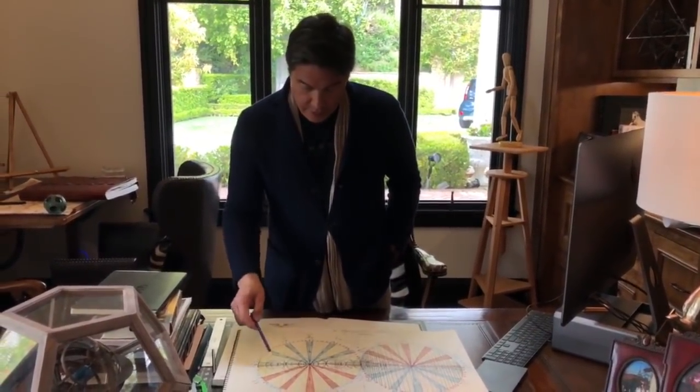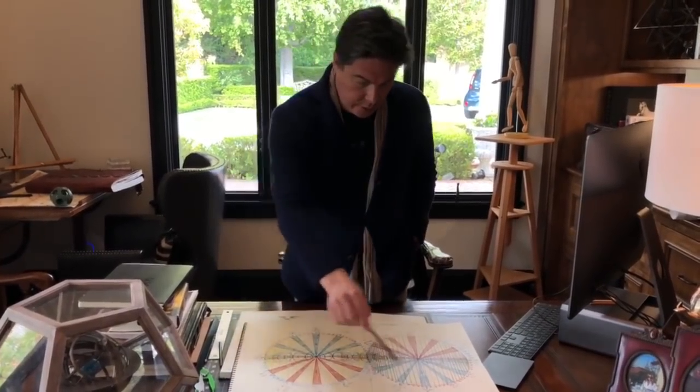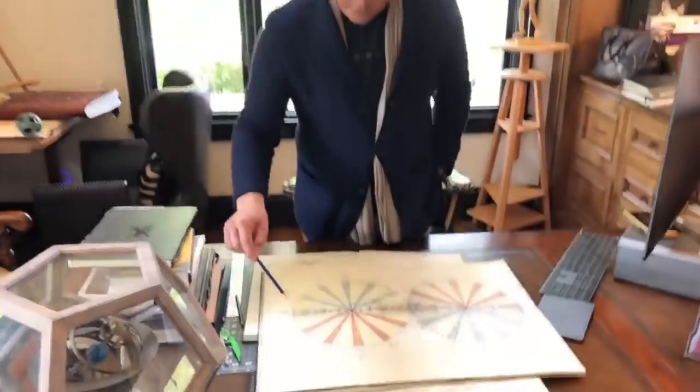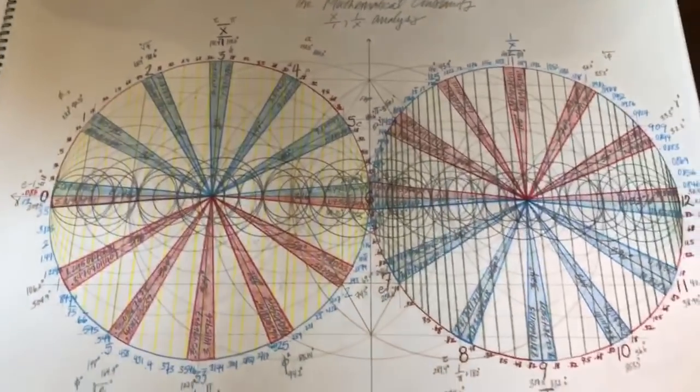This is the math constants in 1 over x symmetry. It's a sine and cosine wave. The red numbers are the sine and the blue numbers are the cosine wave.